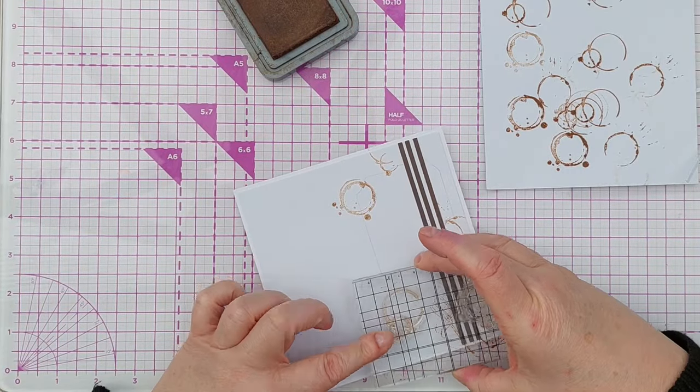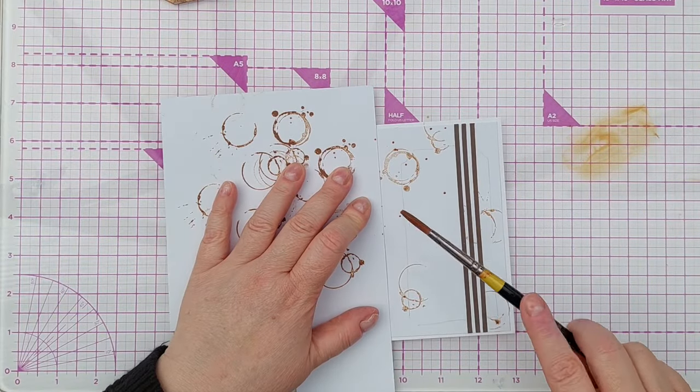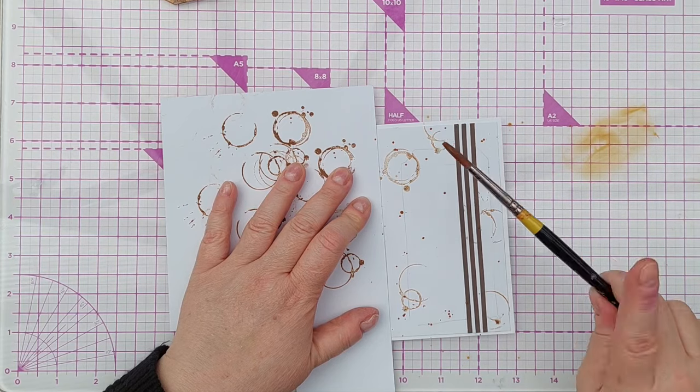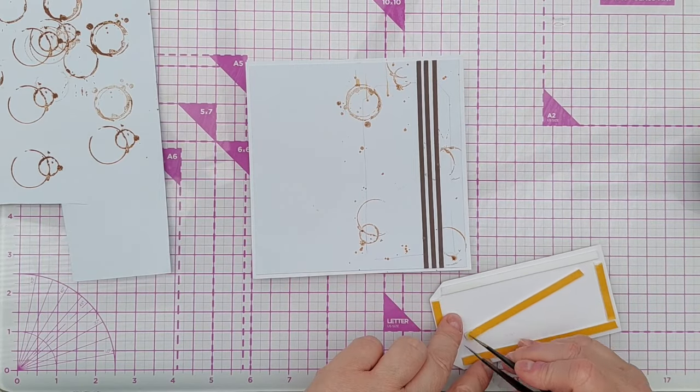Once I'd done all that I masked the left hand side of the card to keep it clean and then took some more vintage photo and a wet paintbrush and added some splatters. This just adds lots of energy and movement to the card.